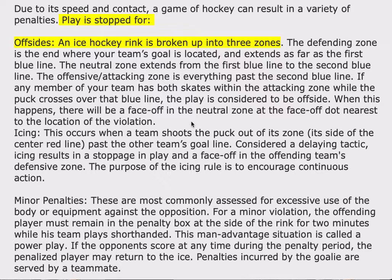An ice hockey rink is broken up into three zones. The defending zone is the end where your team's goal is located and extends as far as the first blue line. The neutral zone extends from the first blue line to the second blue line. The offensive attacking zone is everything past the second blue line. If any member of your team has both skates within the attacking zone while the puck crosses over that blue line, the play is considered to be offside.